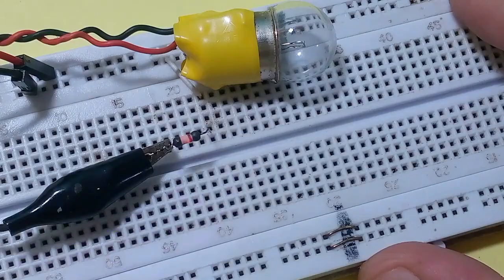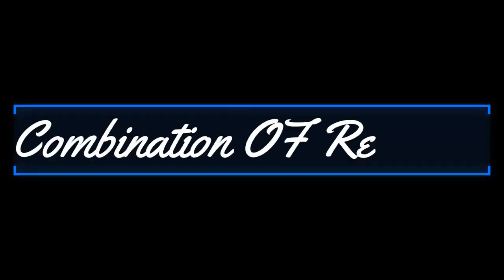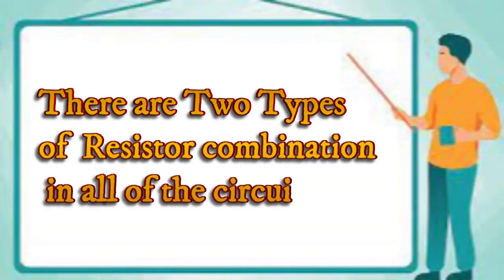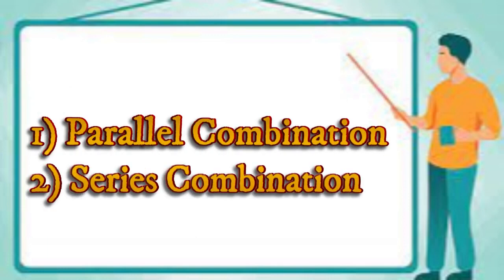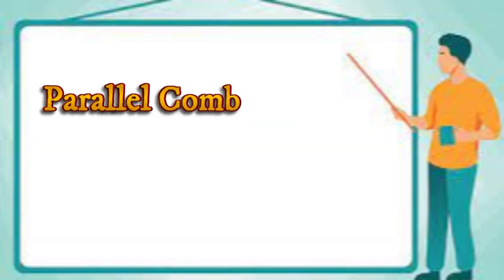Now we add a new section: how we can combine resistors in different combinations and how they interact with these combinations. There are two types of resistor combinations in circuits: 1. Parallel combination. 2. Series combination.